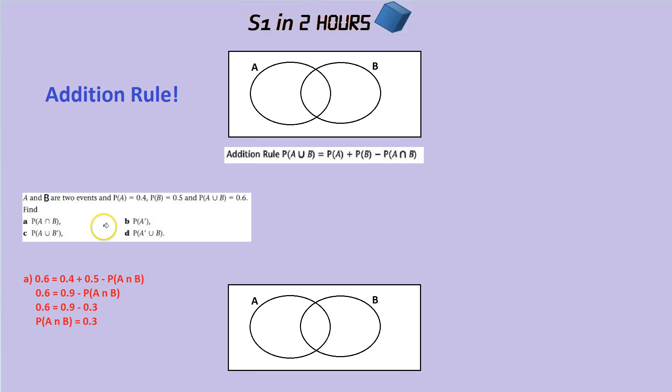Well this is simply using the formula. So we know the probability of A is 0.4, we know the probability of B is 0.5 and we know that A or B is 0.6. Putting that in the formula, you get 0.4 plus 0.5 is 0.9 and 0.9 take away 0.3 is 0.6.